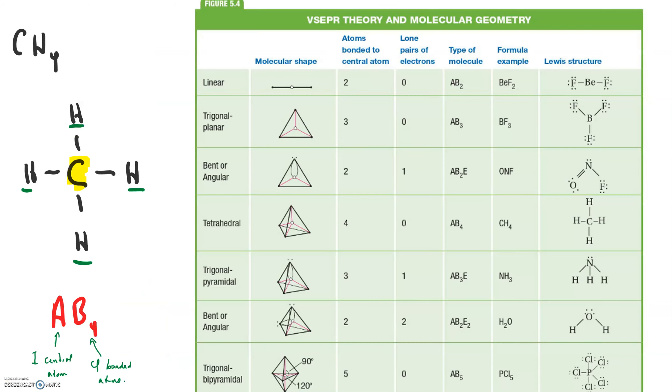So I have just included this chart that shows something that we call molecular geometry. And it is trying to link this code, AB4, to this shape, tetrahedral. Any time we have four atoms bonded to the central atom, we're going to have an AB4 molecule. This shape is tetrahedral. And I'm going to show you how we draw it.